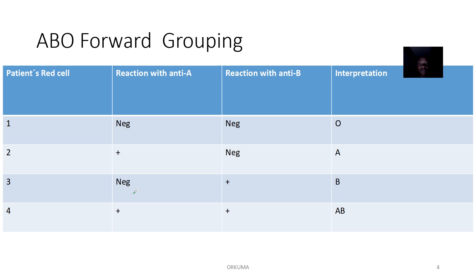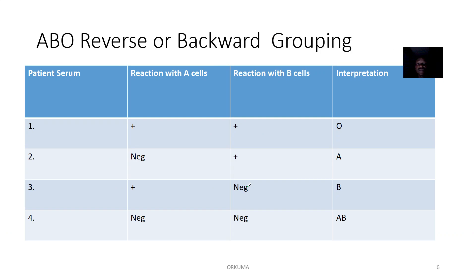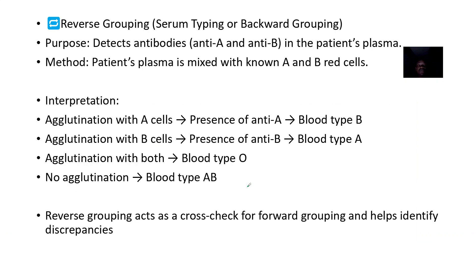So to summarize the forward grouping: if it is negative with all antisera, it is blood group O. If positive with anti-A, it is blood group A. If positive with anti-B, it is blood group B. If positive with both anti-A and anti-B, it is blood group AB.